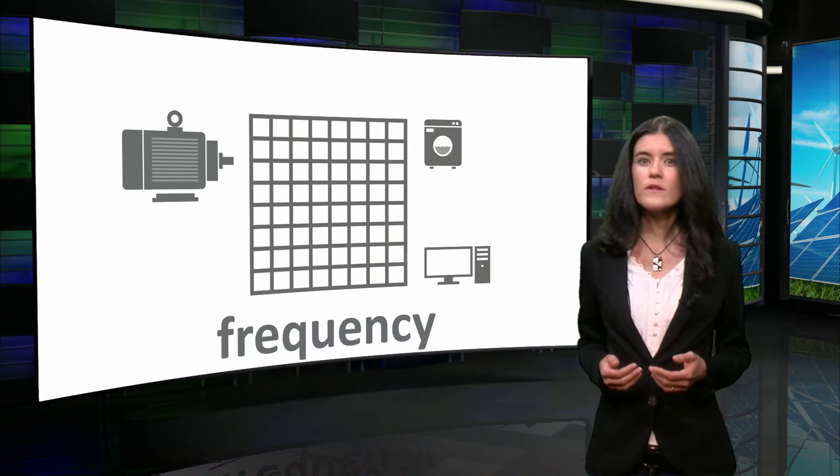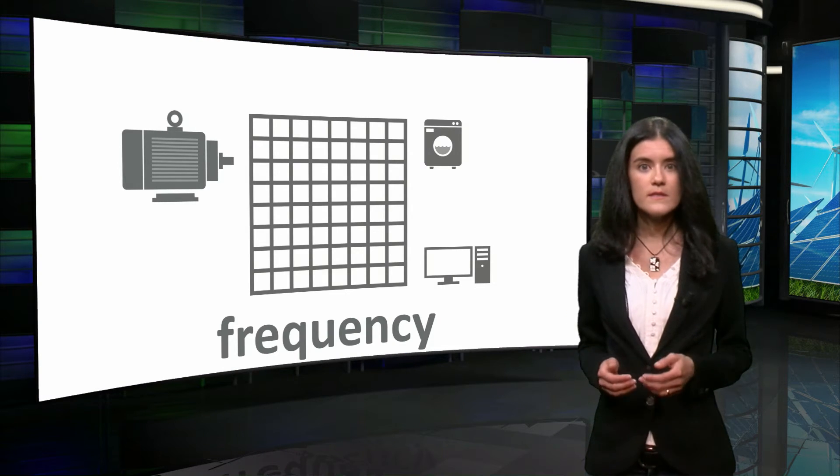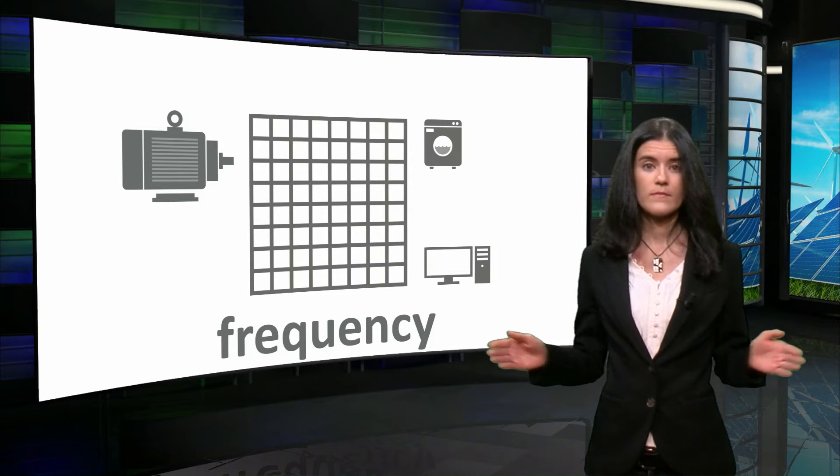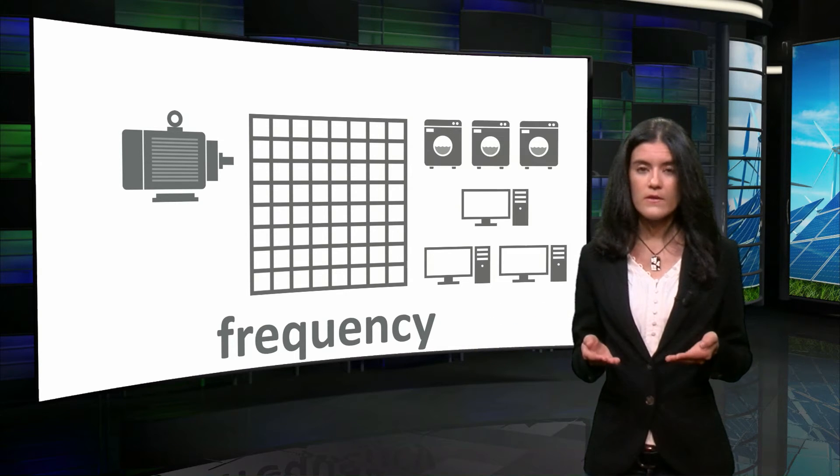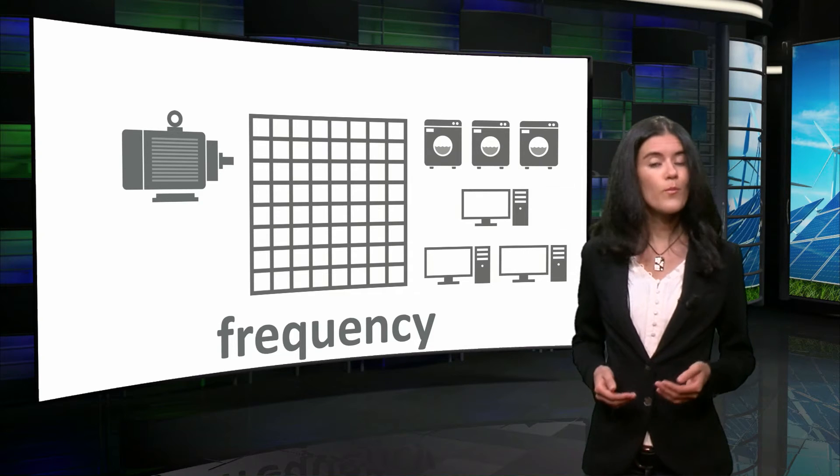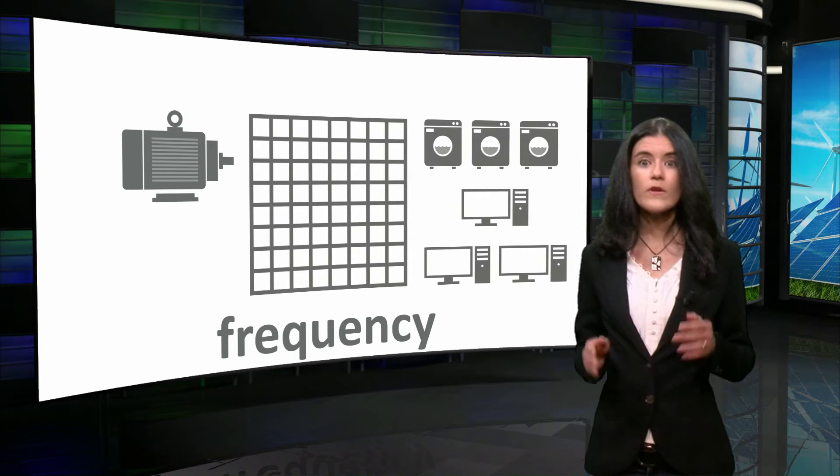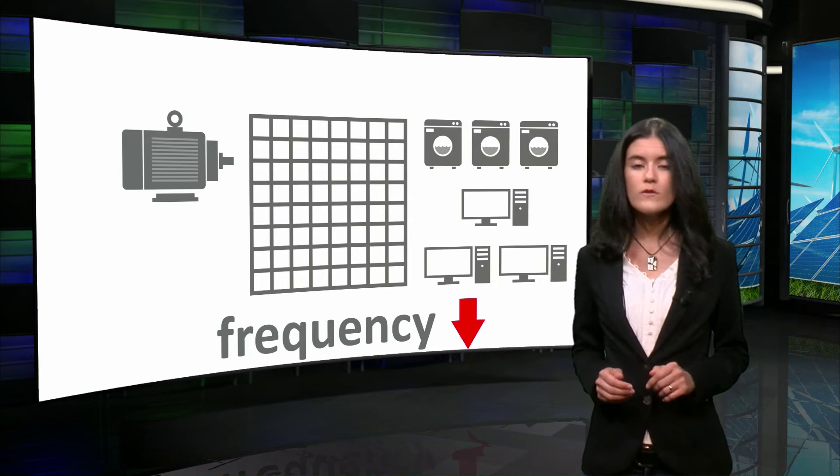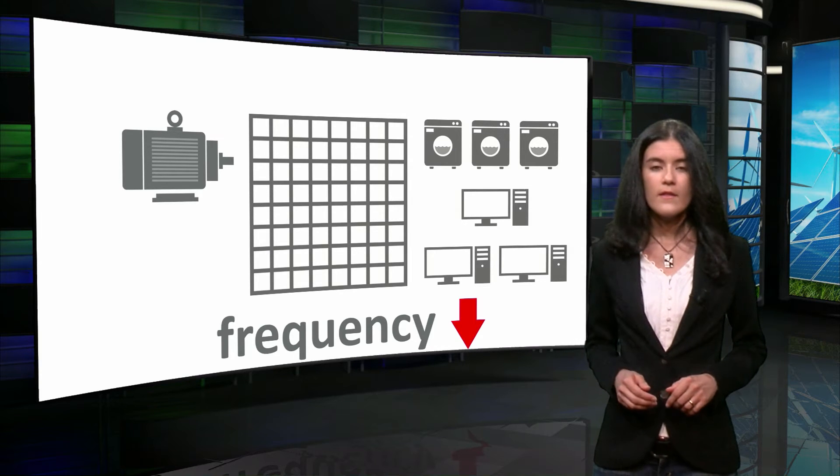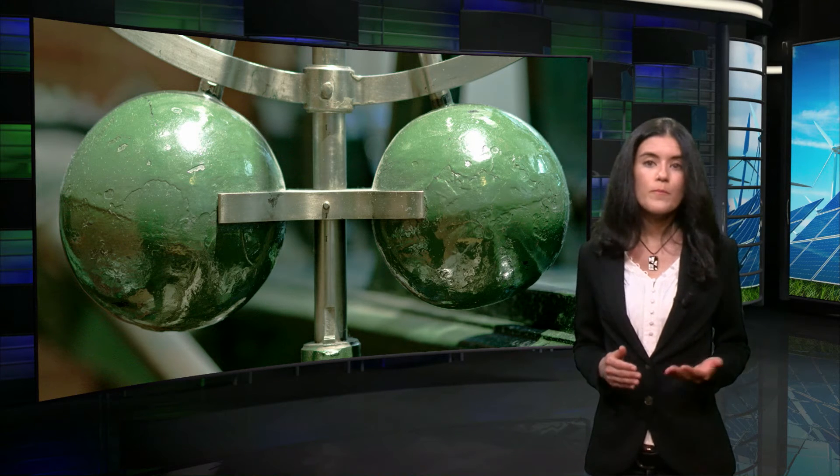It is important to mention that frequency is a common parameter throughout the network. An increase of the active power consumption, at a certain point, results in a reduction of the frequency in the whole system. The active power balance is restored by the speed governor. This action is called primary control.